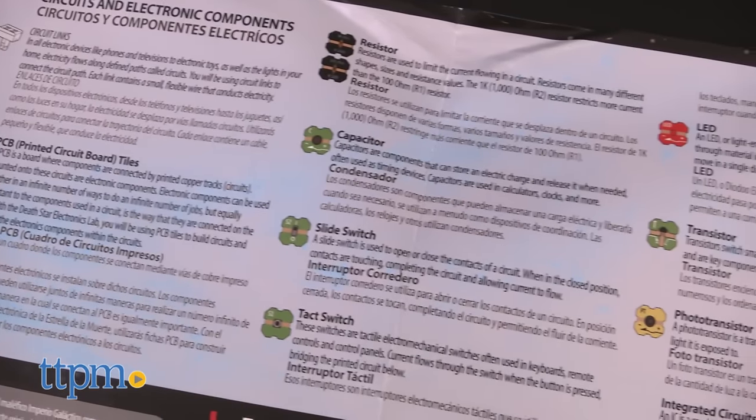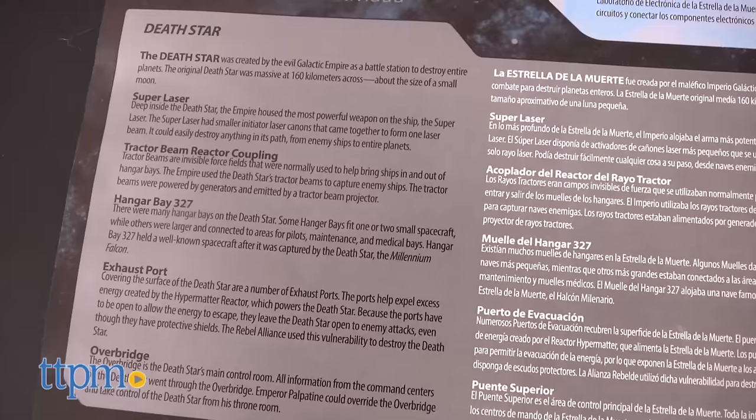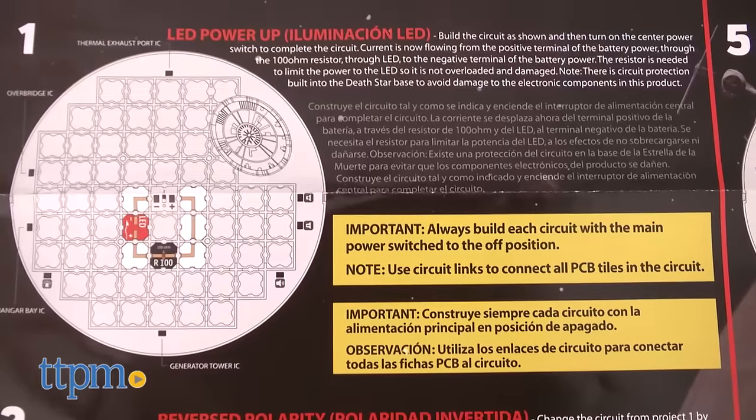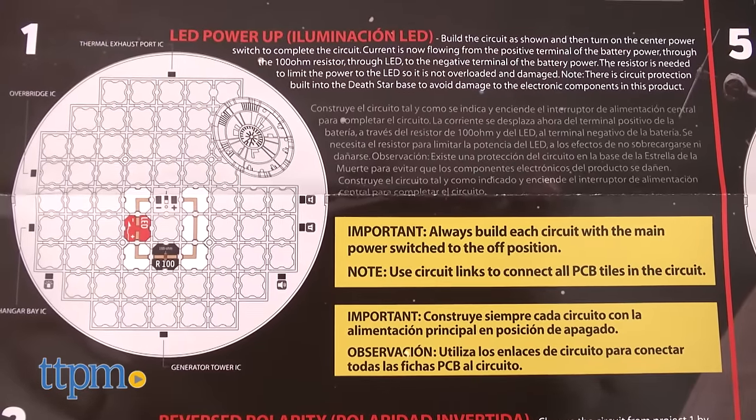The activity guide explains what each of the circuits and electronic components are and how they are used, as well as providing information on the Death Star's history. Once you've read all that, start with the first activity to begin learning how circuits work.